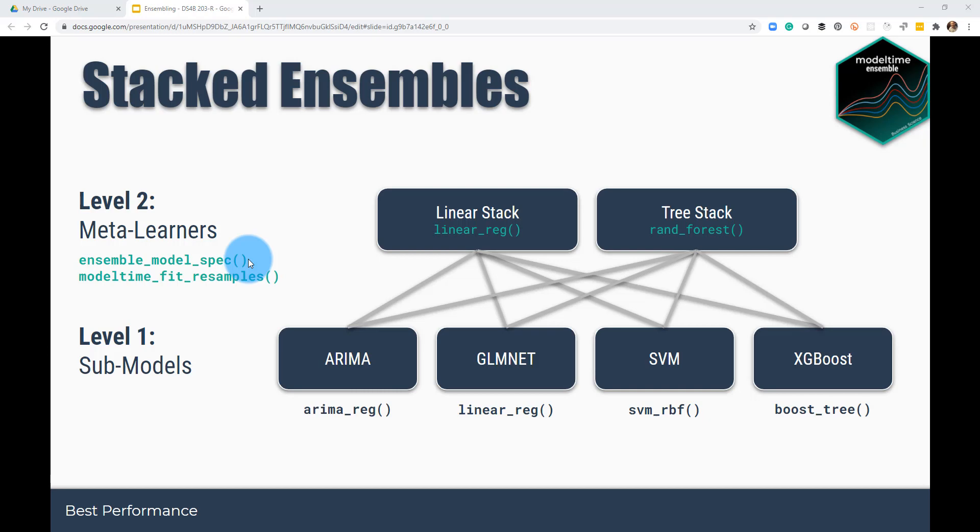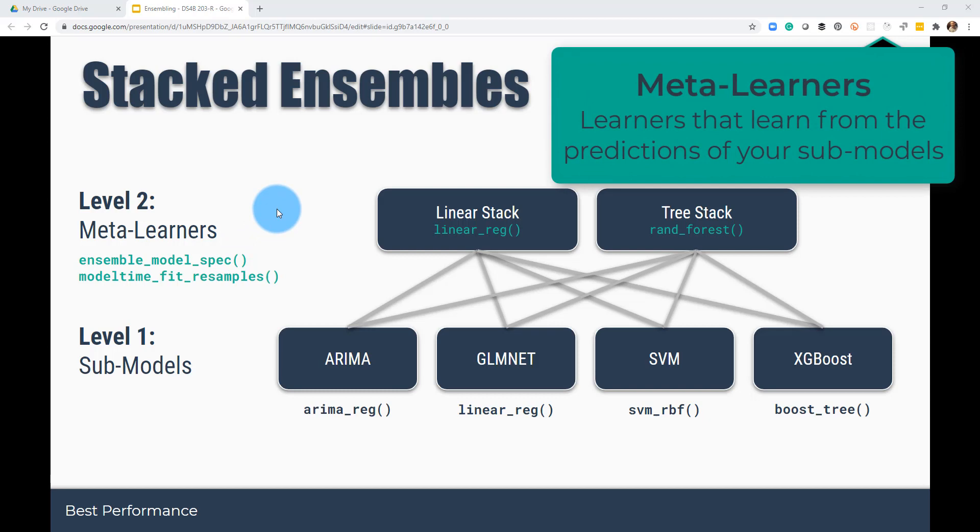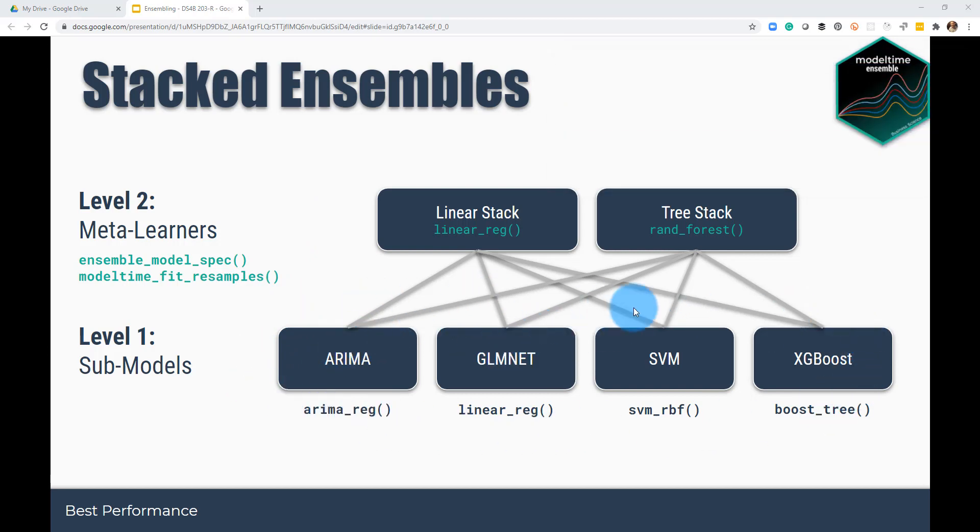And this is what are called using meta learners. So there's another approach that model time ensemble implements is stacked ensembles using ensemble model specs and the model time fit resamples. And I'll explain in a little bit how these work, but basically if you just think about it, you have a model time table again that has four different models. And what you'll do is you'll utilize each one of these models to make predictions and feed each of a second level of meta learners. And we specify these, and that's just another machine learning algorithm. So linear stack would be built using the linear reg function.